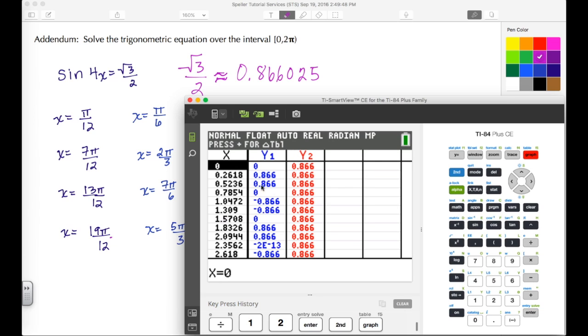What we're looking for is where the y1 and y2 values match. Where they match, we see the decimal equivalents to each one of these answers. We see two of them, then two more here.